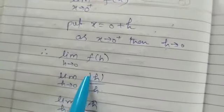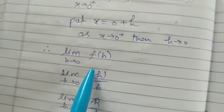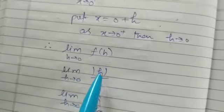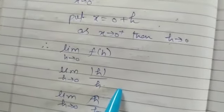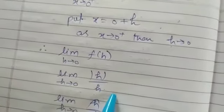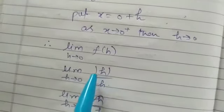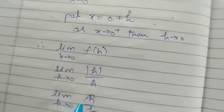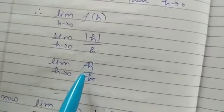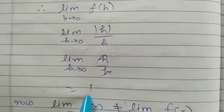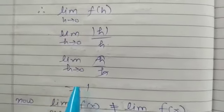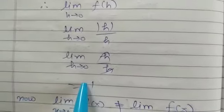So limit h tend to 0, mod h upon h. Now this is the 0 by 0 condition. If we put h equal to 0, then 0 by 0 situation arise, so that is called indeterminate form. So we have to simplify this first. If this mod will remove, it will be h. Now h and h will cancel out, and that is equal to 1. So we see that RHL is 1 and LHL is minus 1.